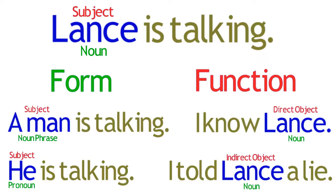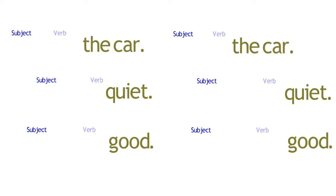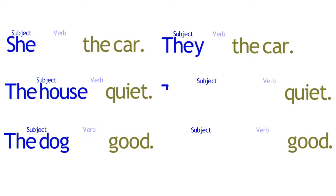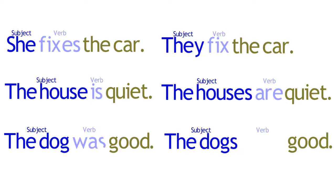Note that the word 'verb' is ambiguous. Depending upon the context, a verb can describe either the form of a word as a part of speech, or the function of that word within a given sentence pattern. As another example, consider subject-verb agreement. When a third-person subject changes from singular to plural, the verb often changes to agree with this subject. Note that this change does not affect how the verb functions in the sentence, but is rather a change in the form of the verb.